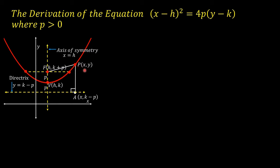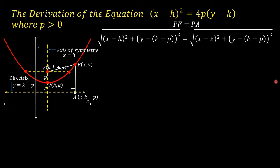Point P with coordinates (x, y) is a point on the parabola and represents every point on the parabola. According to the definition of a parabola, every point on the parabola is equidistant from the focus and the directrix. Based on that definition, PF = PA.